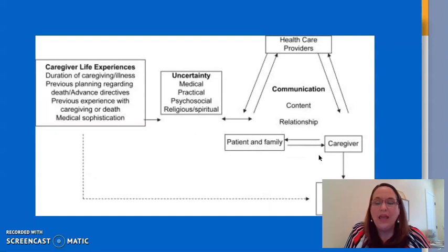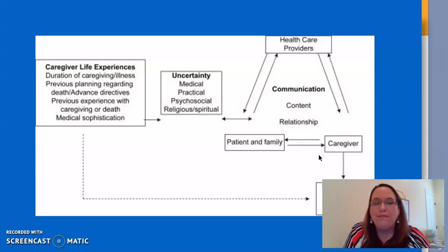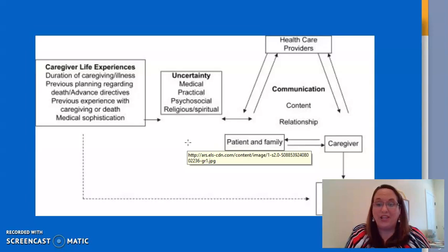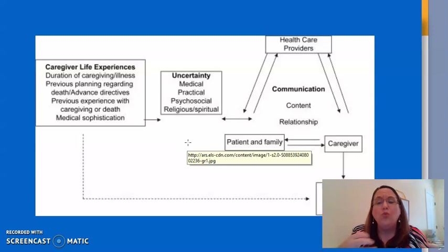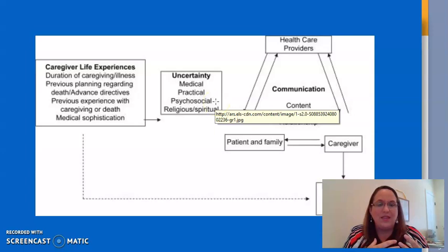Mishel's uncertainty and illness theory also has very specific concepts. The main concept is uncertainty, and Mishel looks at it in several ways. There's uncertainty related to the medical side — patients don't necessarily speak medical terminology, so they don't understand the big words being thrown at them. There's also practical uncertainty: life in general is going to be turned upside down — they may not be as independent, may not be able to work and support their family, or may have to make home modifications like building a ramp. All of those things are scary when patients don't yet know what's changing.